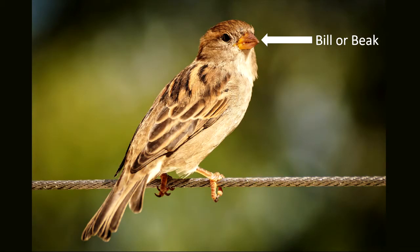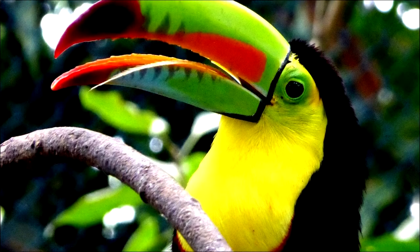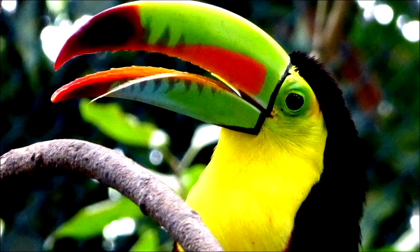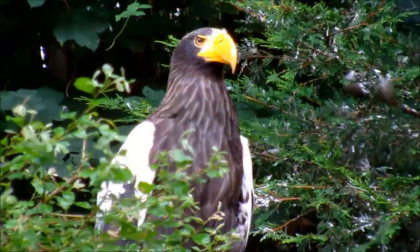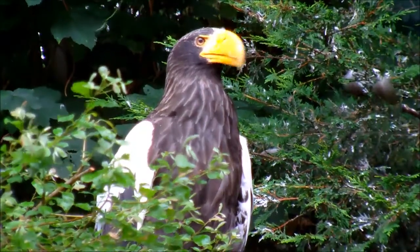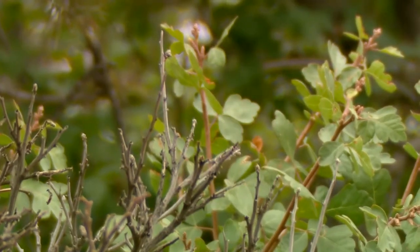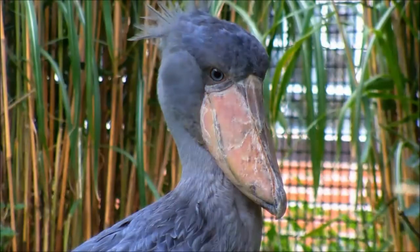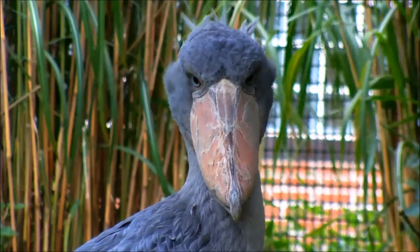The bill, or beak, refers to the part that the bird uses to eat. Bills and beaks come in various lengths, shapes, and sizes. Birds of prey, such as eagles, have deeply hooked bills for ripping apart flesh, while hummingbirds have long beaks for reaching far into flowers. Each bill is unique to suit its purpose.